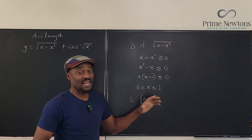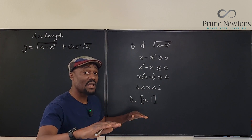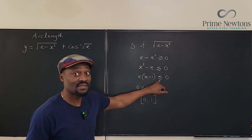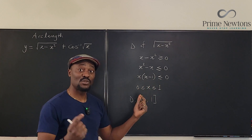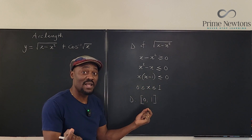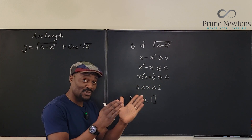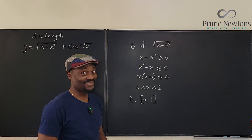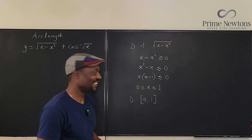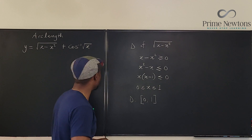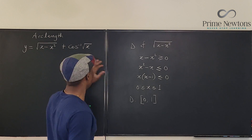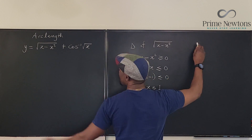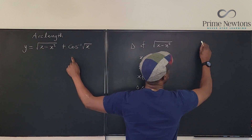You see what I did there — I didn't have to draw a sign chart. Anytime you solve a less-than quadratic and get two answers, your answer is always between them. Always. So we just got the domain for this first part. Now let's compare it to the second function.